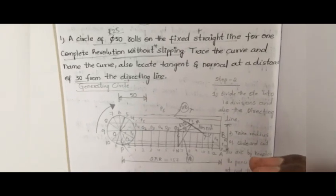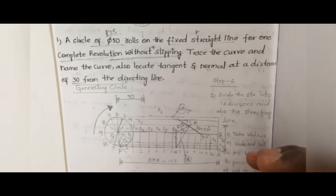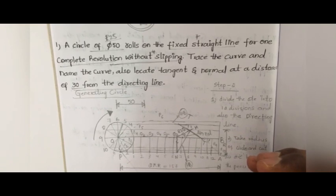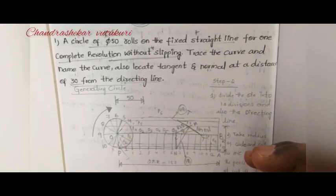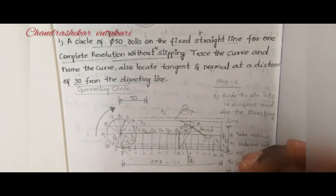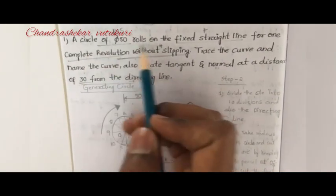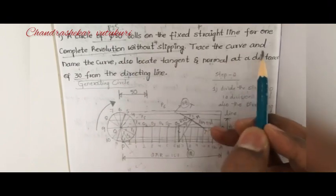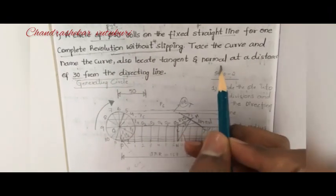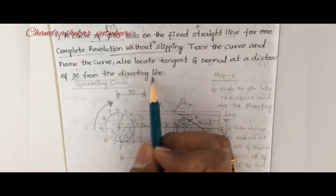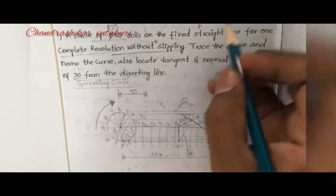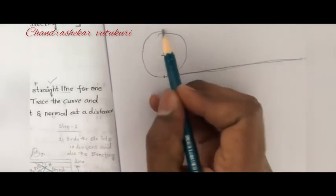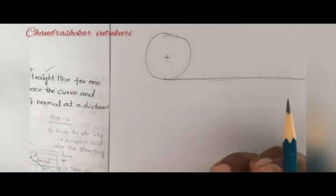Welcome back students. In today's lecture I am going to discuss the topic cycloidal curves. Before tracing the cycloidal curve, we are supposed to look at the question to determine whether it is an epicycloid, hypocycloid, or general cycloid. The question states: a circle of diameter 50 rolls on a fixed straight line for one complete revolution without slipping. Since we have a fixed straight line with a circle moving on it, this is a general cycloid.